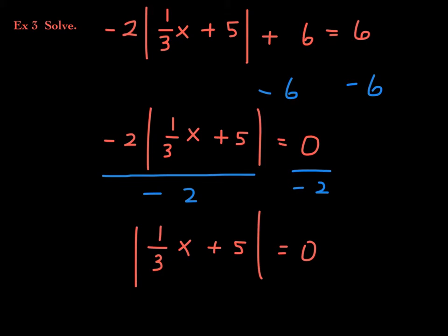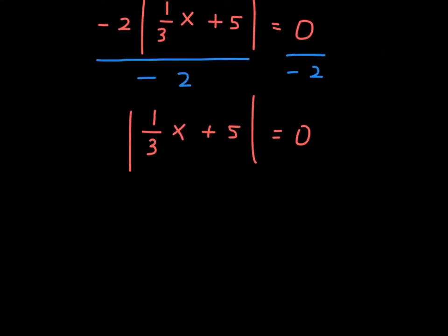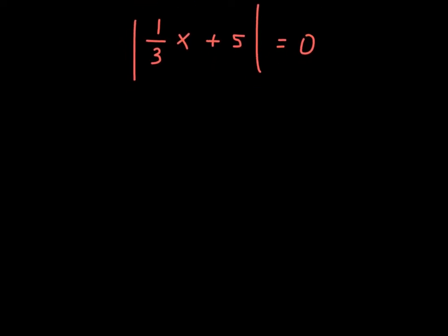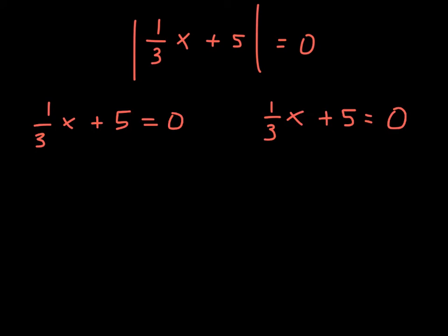Now split into a compound equation: 1/3 x plus 5 equals 0, or 1/3 x plus 5 equals the opposite of 0, which is still 0. Since both equations are identical, splitting into two is redundant — we only need to solve once and will have one answer only.